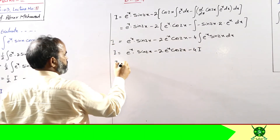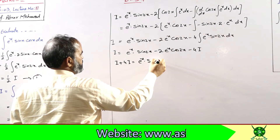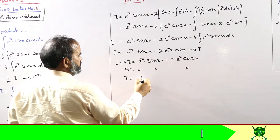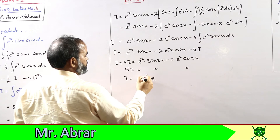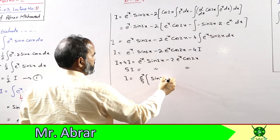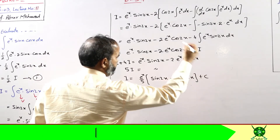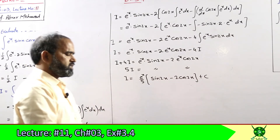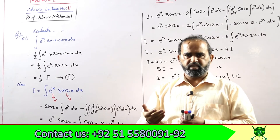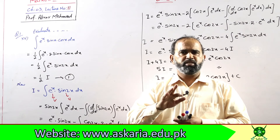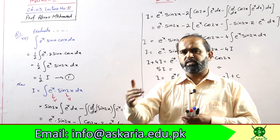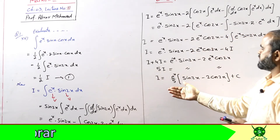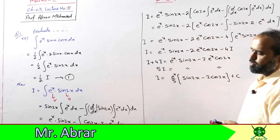Minus four I — ab I ko idhar le aao. C abhi nahi likhna jab tak final step na ho jaye. Yeh ho jaayega five I, aur yeh saara function as it is. Ab I akela ho jaayega — one over five kar dein ya whole divide kar dein, ek hi baat hai. Exponential e^x common le lein, ander sin(2x) minus 2 cos(2x) bachega. Aur end pe plus C likhna hai — jab I ka coefficient divide ho jaaye to aakhri step mein plus C likhna hai.